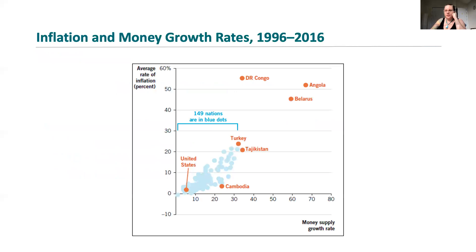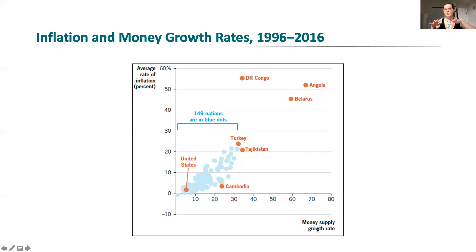We can see there's a really positive correlation between money supply growth rate and inflation. Countries like the United States that tend to have a low growth in money supply also experience really low inflation. Countries like Turkey, with a much higher growth in their money supply, also experience much higher rates of inflation. Up in the Democratic Republic of Congo and Angola, this is hyperinflation — runaway inflation that's really a result of growth in the money supply. They're pumping currency into the economy too fast, outpacing the growth of their production economy, and the result is hyperinflation.